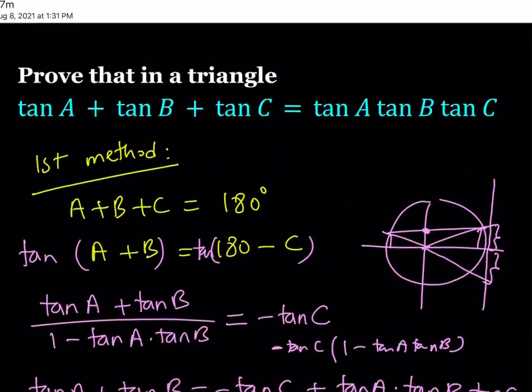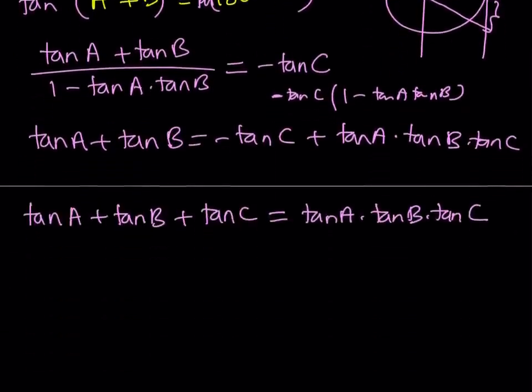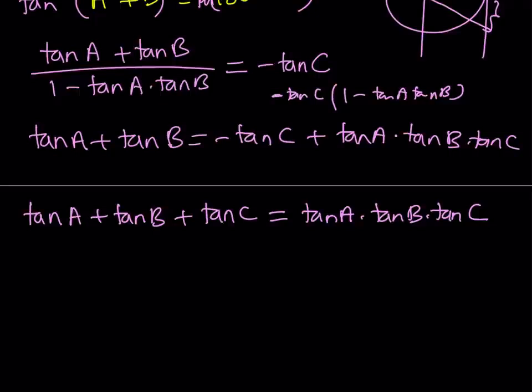So this concludes the first method. We proved that in a triangle this is always true. Now, what happens if A, B, or C is 90 degrees? We get a situation where tangent of that angle approaches infinity, and both the right-hand side and the left-hand side will approach infinity if you are talking about limits.